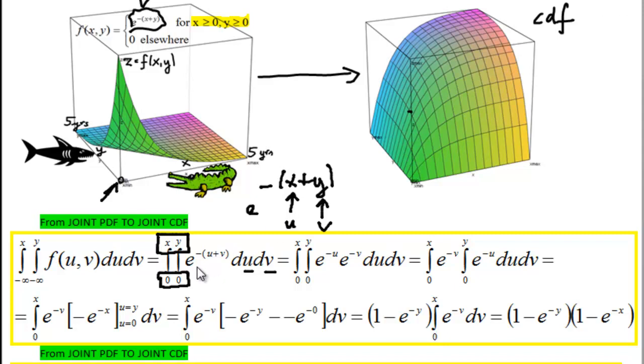Now e to the power of minus u and v can be written as a product of two functions. Because we first tackle the first integral which is with respect to u, we can move e to the power of minus v in the middle, i.e. outside the second integral because this is just like a constant. We are integrating with respect to u and therefore v will behave like a constant.